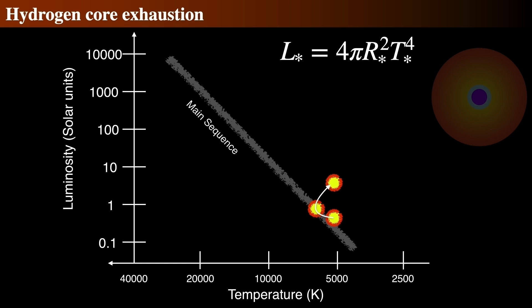To keep the star from collapsing, the hydrogen burning moves out into a shell around the core. This shell burning has observable results.